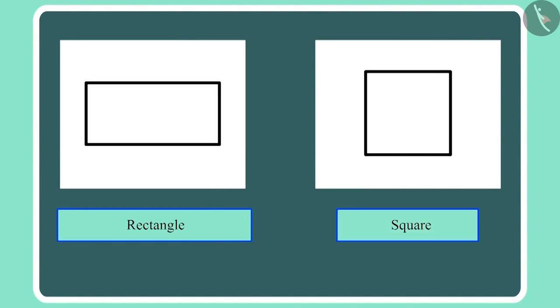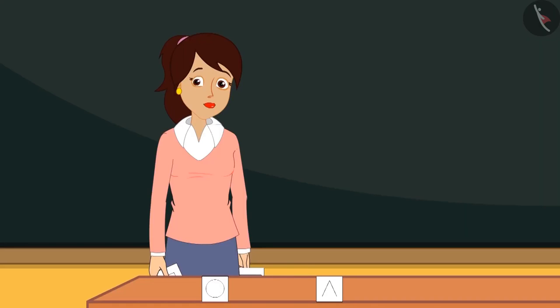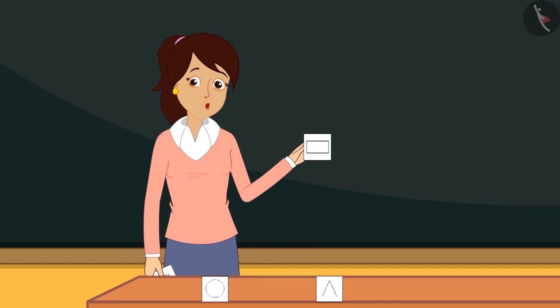And here in this shape, all four lines are not equal. Only the lines opposite to each other are equal. The length of the adjacent lines are different. We call this rectangle.